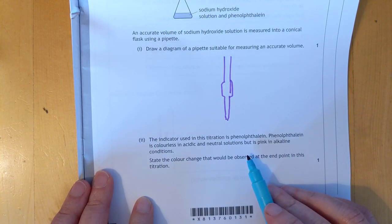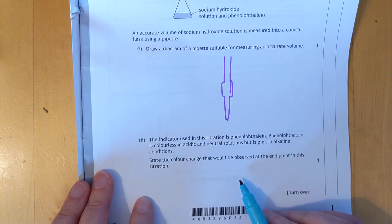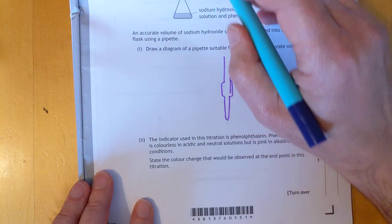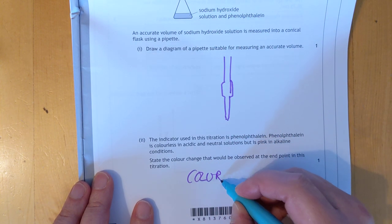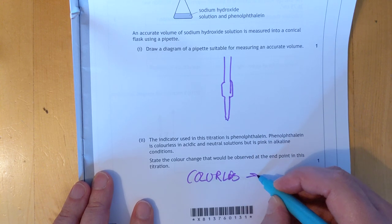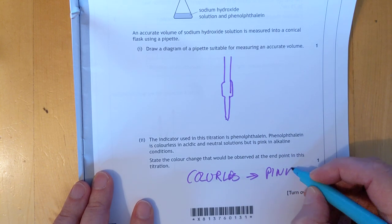Phenolphthalein is colorless in acid and neutral solutions, pink in alkali. Yes it is. State the color change that you observed. Right. You start with alkali and you're dripping acid in, so therefore it would be colorless to pink. In fact, approximately the same pink as this pen. Fuchsia pink is how it's described in the textbooks.